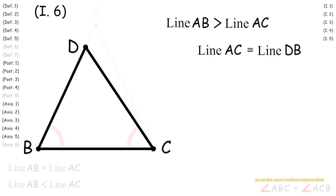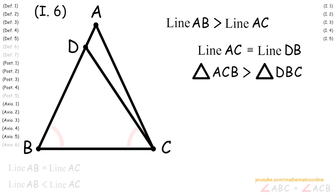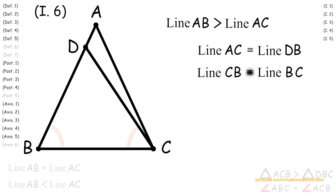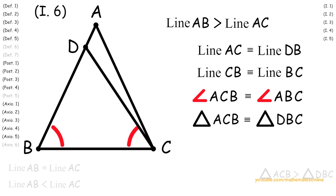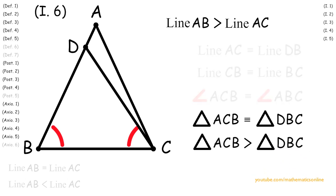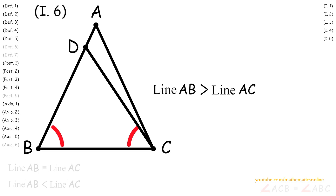Looking at triangle DBC and triangle ACB, we can see that by Axiom 5, triangle ACB is greater than triangle DBC. We can also see that both triangles share the same side — specifically, line CB is congruent to line BC. Since both triangles share a corresponding side, angle, and side, then by Axiom 4, triangle ACB is congruent to triangle DBC. But we also showed that triangle ACB is greater than triangle DBC. It is not possible to have both true at the same time, so we have a contradiction. The reason we have this contradiction is because we assumed line AB is greater than line AC, so this statement must be false.